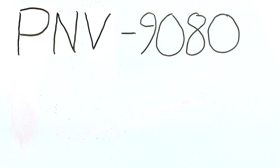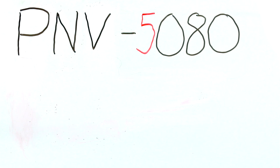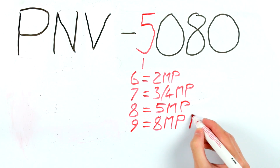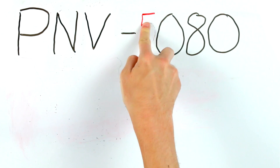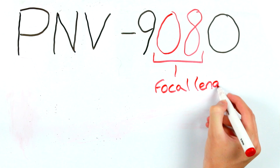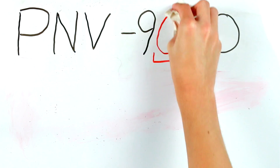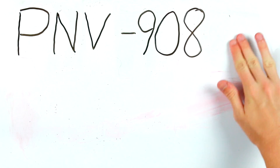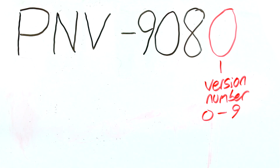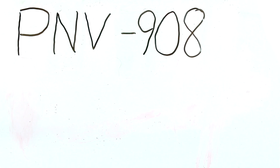Moving on to the second half of the product codes — this half starts with a four-digit number. The first digit represents the resolution of the camera and can range from one to nine. As camera technology improves you won't see any Samsung cameras with a number lower than five, which stands for one megapixel. Six stands for two megapixel, seven stands for three and four megapixel, eight stands for five megapixel, and nine stands for eight megapixel or higher. The next two digits dictate the focal length and whether it is a fixed or varifocal lens — it is easier to check the product page for these details. The final digit is the camera version number, ranging from zero to nine, and will most likely be zero for newer models.